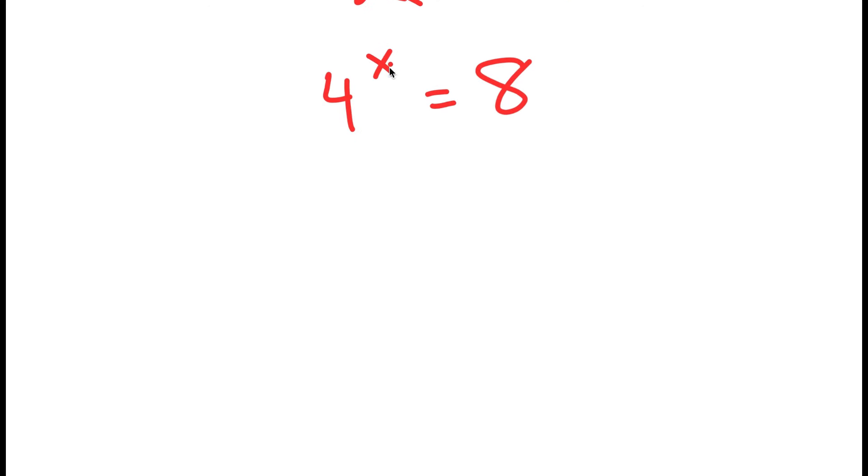Now, if you plug in values of x, you may notice that x isn't going to be a whole number because 4 to the power of 1 is equal to 4, and 4 to the power of 2 is equal to 16. So we know that x is going to be somewhere in between 1 and 2.